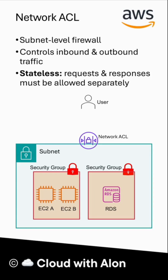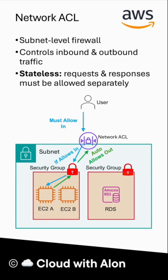For an example, a user sends a request and the NACL first checks it. If it is allowed, the request reaches the security group. If the security group allows it, the request reaches the EC2 instance. The EC2 instance processes it and sends back a response, and the security group automatically allows it. But the NACL must have an outbound rule for this response — then only the response reaches the user.